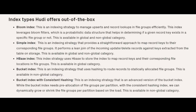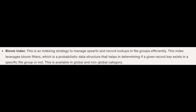Now that we understand global and non-global index, let's explore the various index types Apache Hoodie offers out of the box: Bloom Index, Simple Index, HBase Index, Bucket Index, and Bucket Index with Consistent Hashing. Let's talk about the Bloom Index.